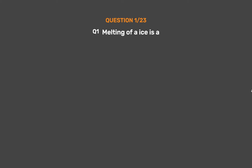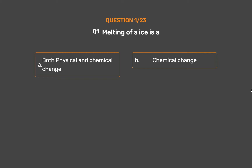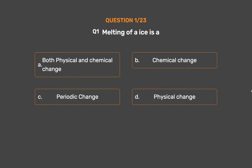Question number 1. Melting of ice is — Option A: Both physical and chemical change. Option B: Chemical change. Option C: Periodic change. Option D: Physical change.